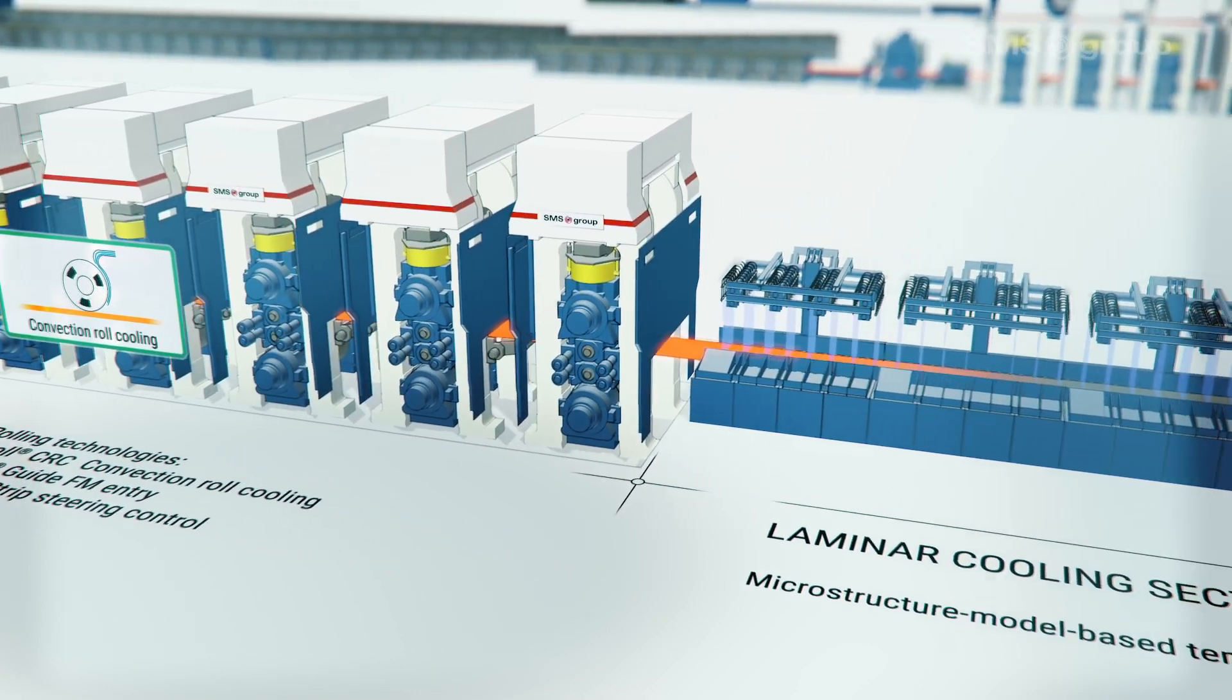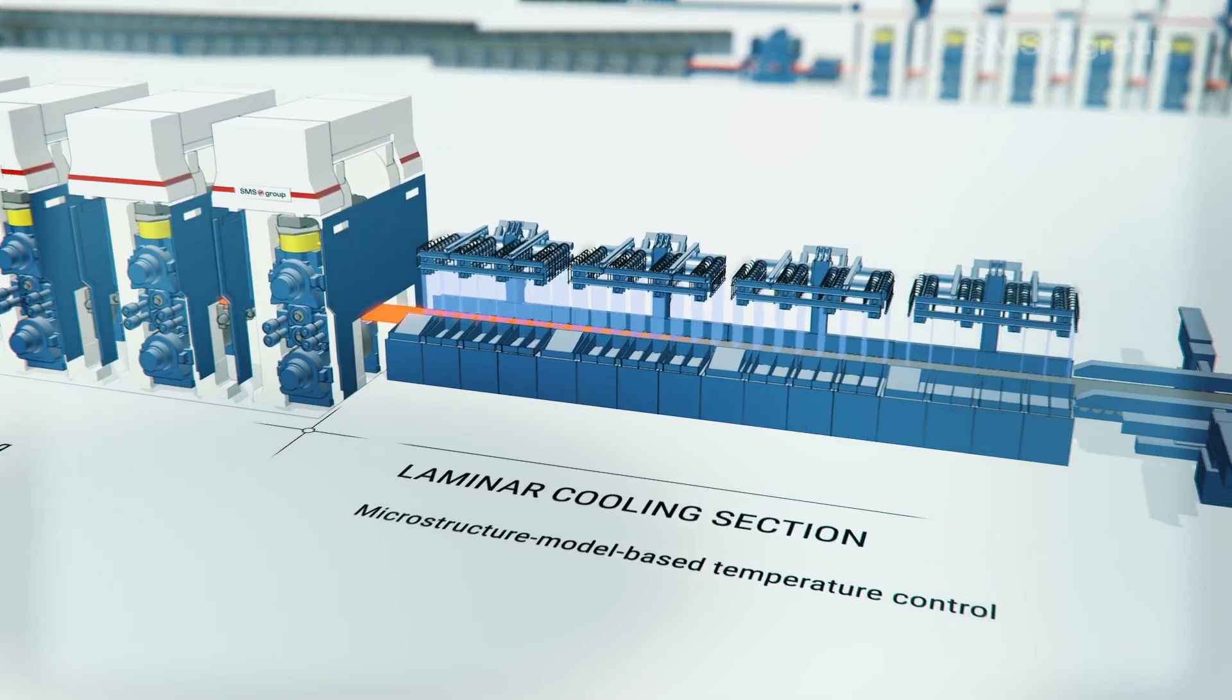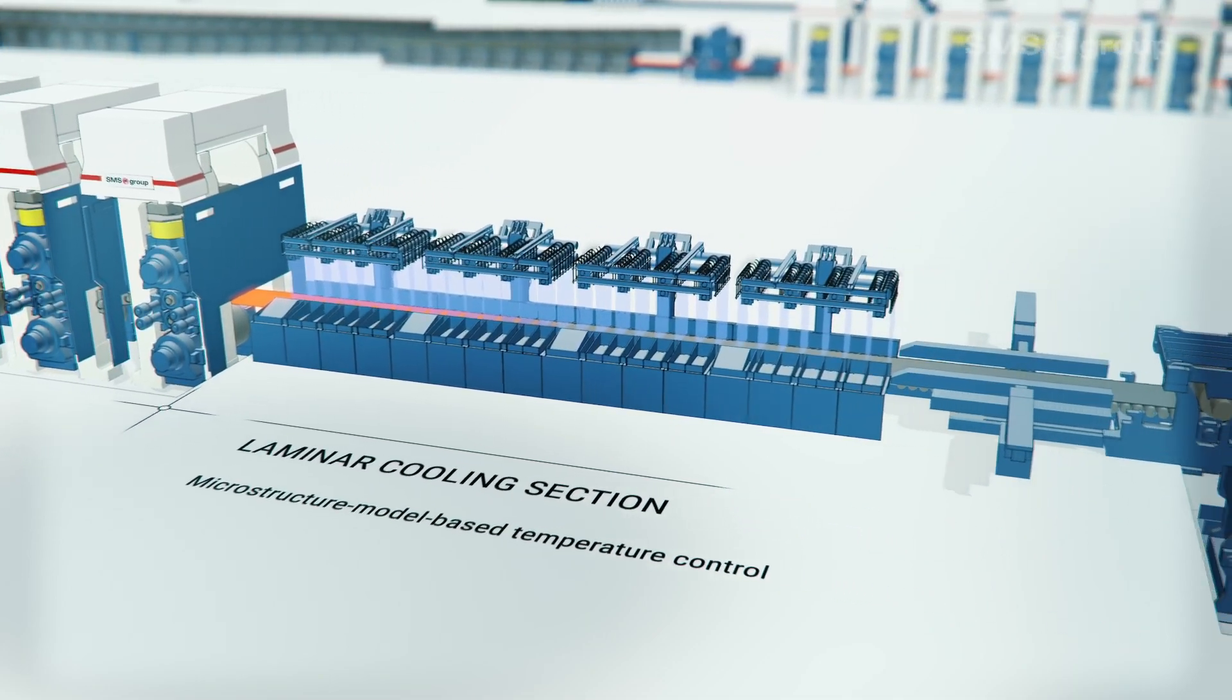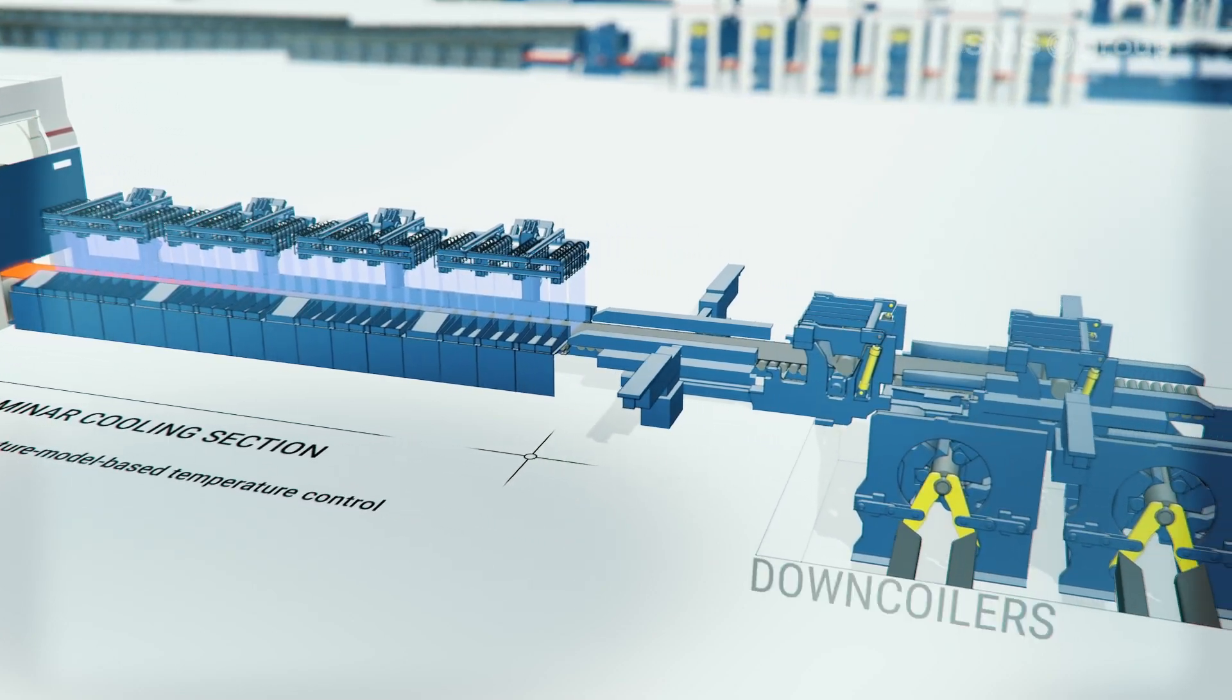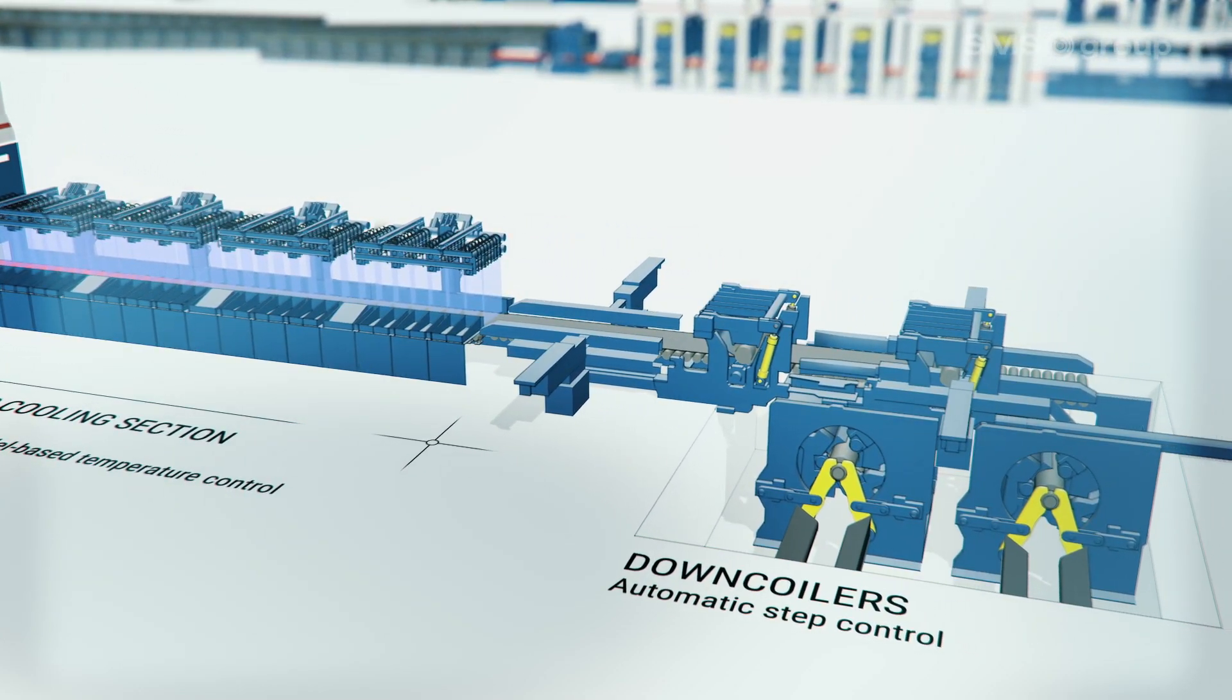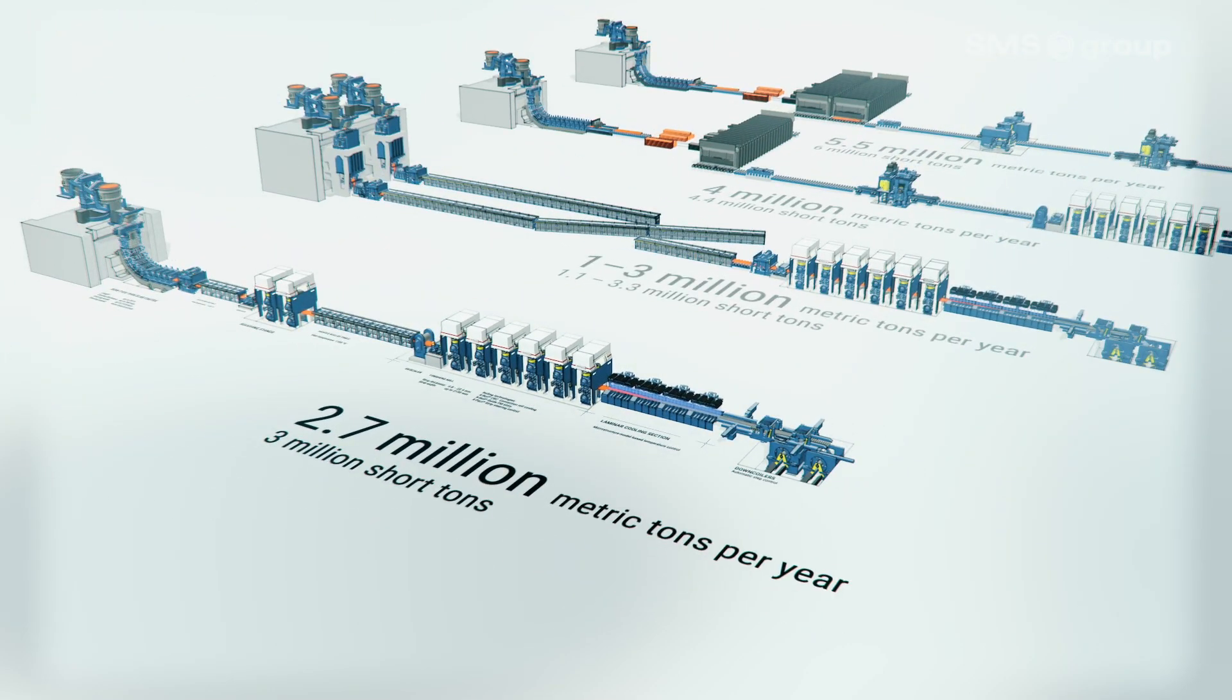State-of-the-art laminar cooling technology is installed, which offers a wide range of adjustable cooling rates. The two down-coilers are designed to coil ultra-thin strips as well as heavy pipe grades. The Nexus plant is capable of producing up to 2.7 million metric tons per year with one strand.